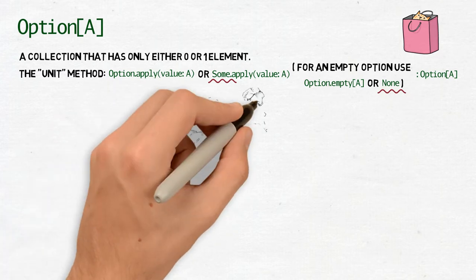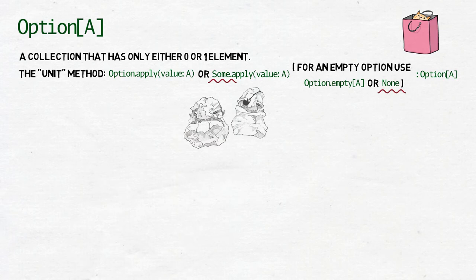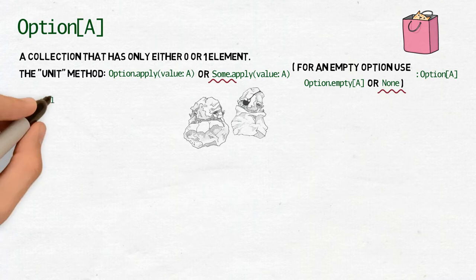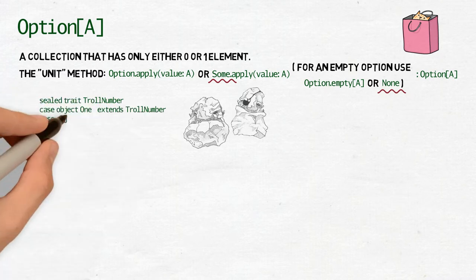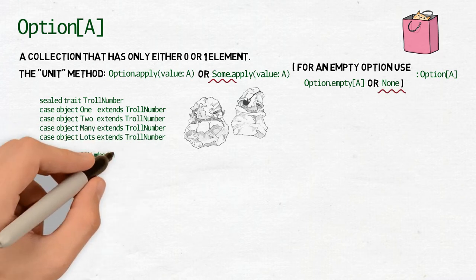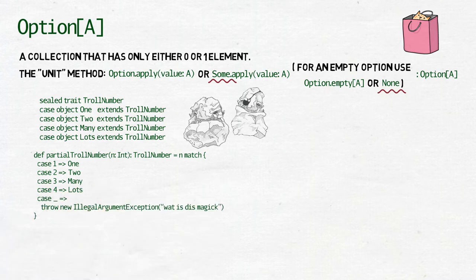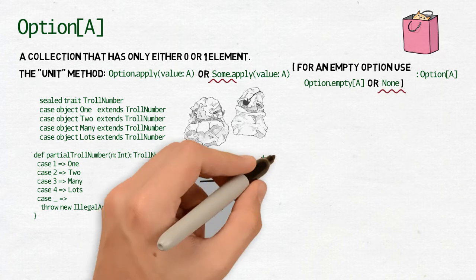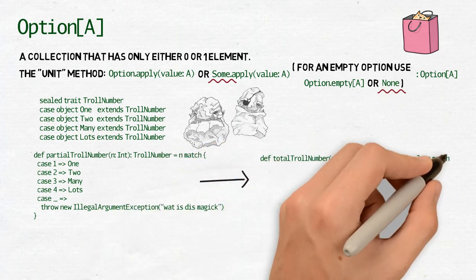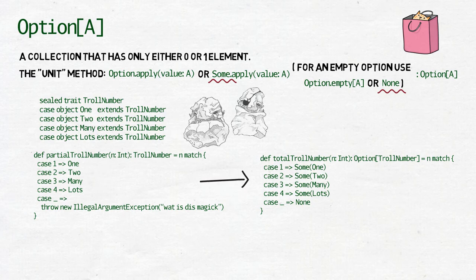In Terry Pratchett's Discworld series, trolls are a quartz-based form of life. Their intelligence is affected by their temperature. They can be very clever when it drops close to absolute zero, but usually they are somewhat less intelligent on average and they have a bit of trouble with big numbers that is numbers bigger than two. So here we have a field trait troll number, case objects one, two, many and lots. We have the method partial troll number that will return one of those case objects or troll an exception if the number is bigger than lots. And we have another total troll number method that will return an option of troll number and that option will be either some of one of case objects or none.